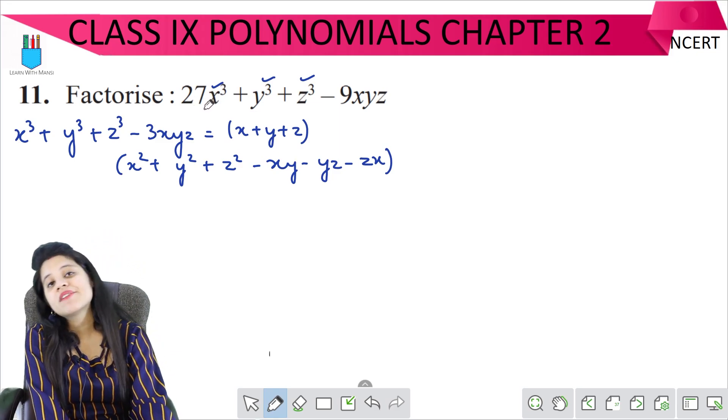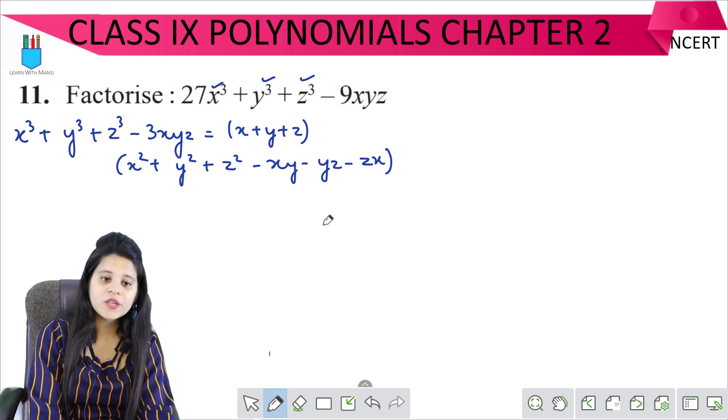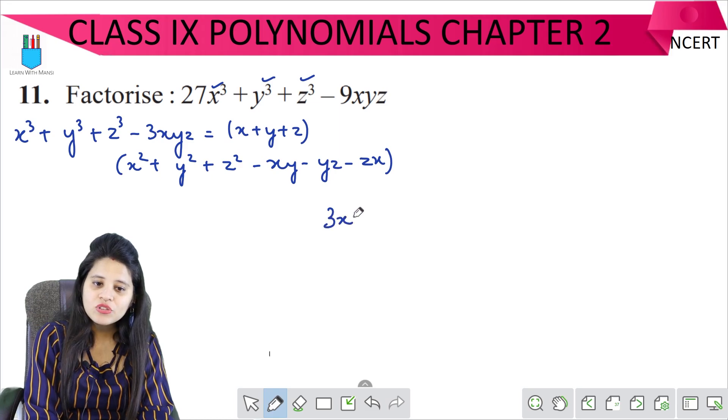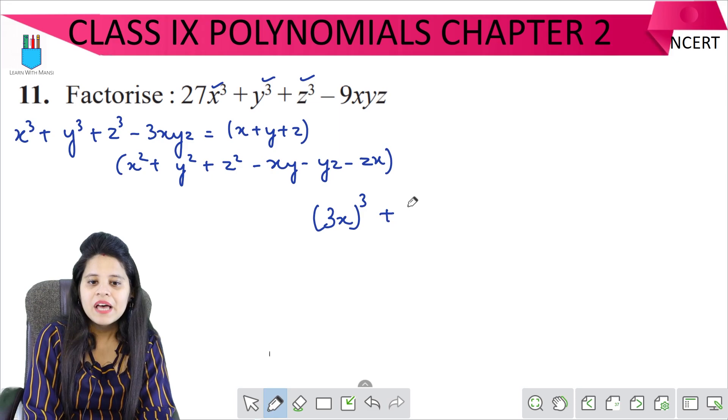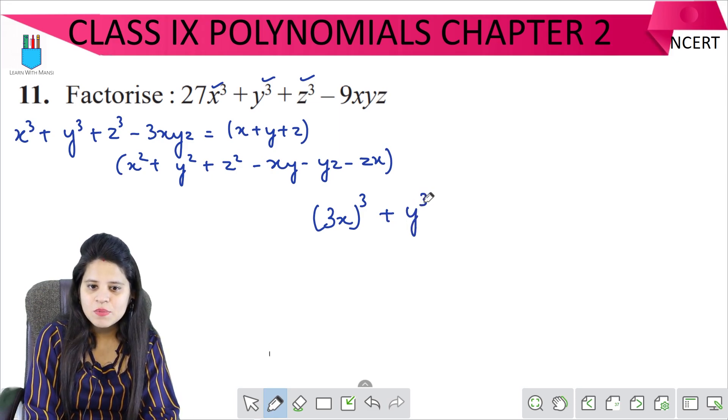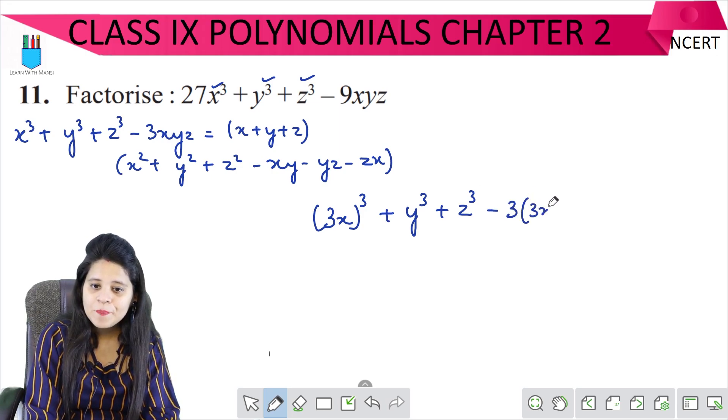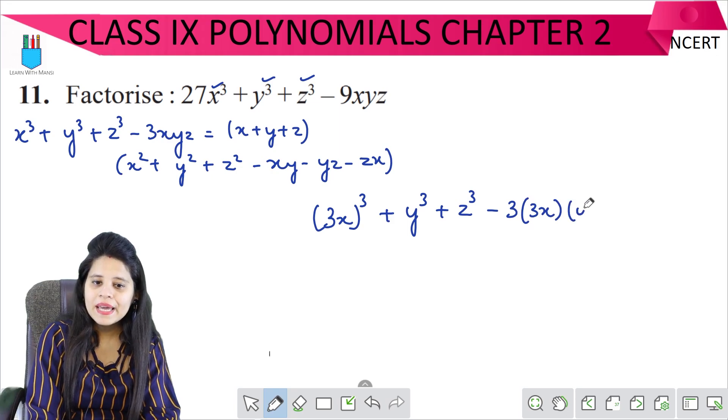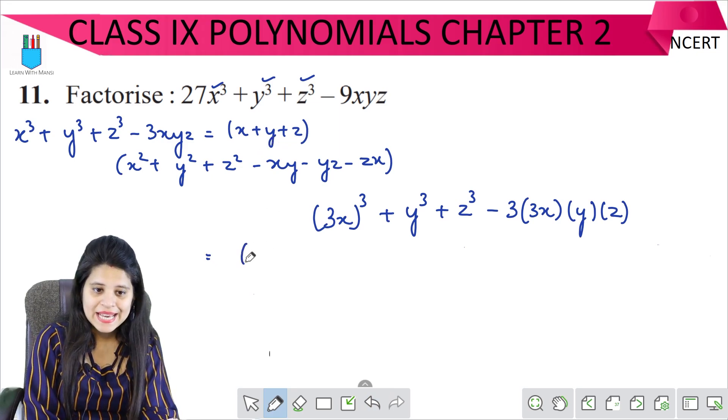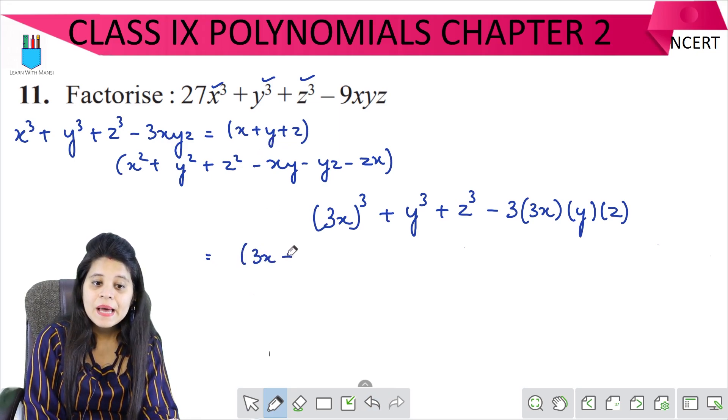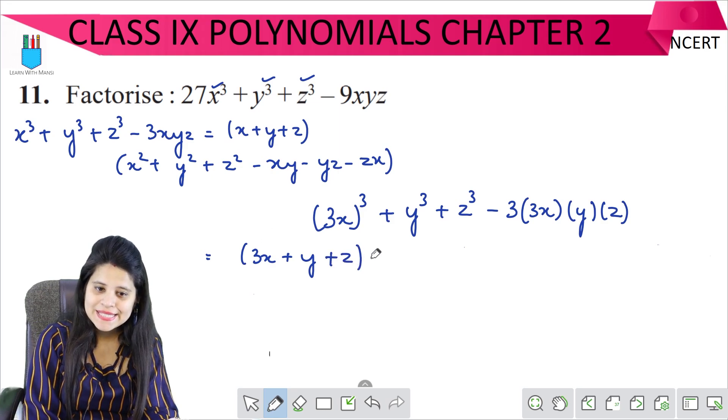So 27x³. Now, 27 which is the cube? It is the cube, so this will be the whole cube. Then plus y³ as it is. I don't need anything to do. Plus z³ as it is. Minus 3x. What is 3x? 3x, y, y, and this is z. So here, x plus y plus z. What is x? 3x plus y plus z.